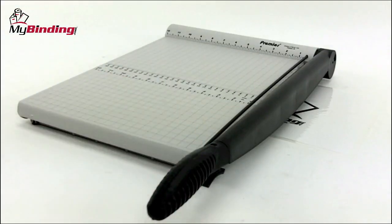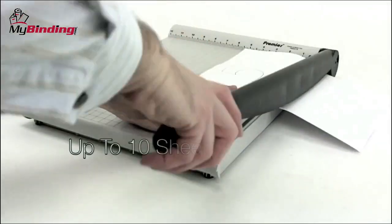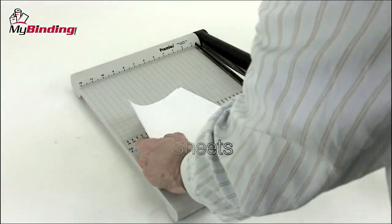The large 15-inch work base allows you to cut landscape as well as portrait and also oversized documents. The P215X can handle up to 10 sheets of 20-pound paper at a time.